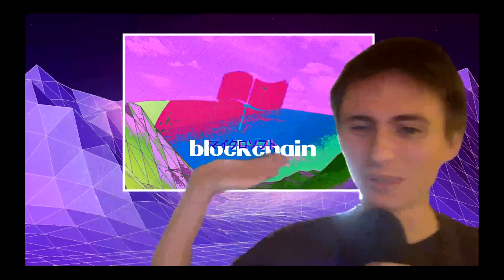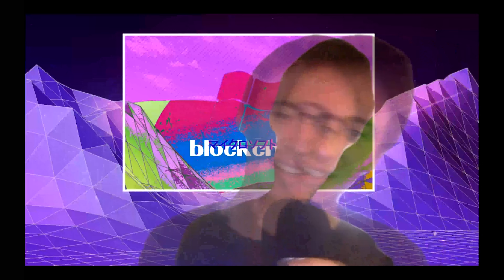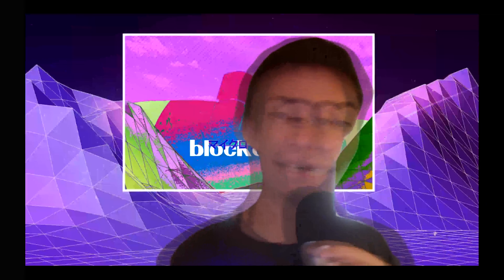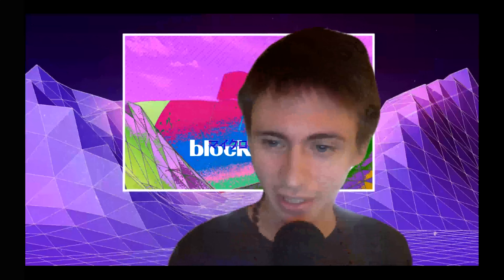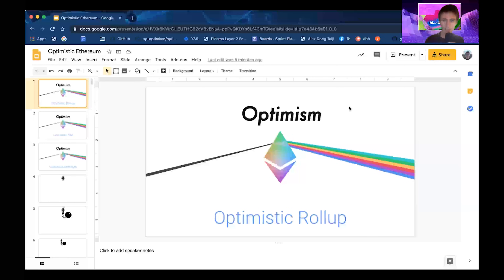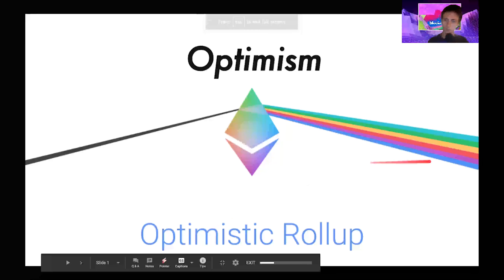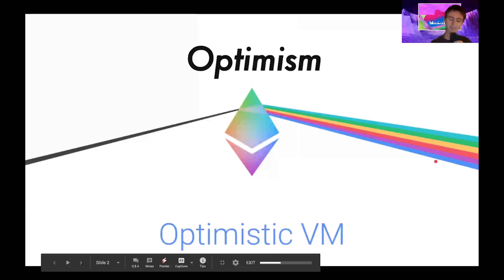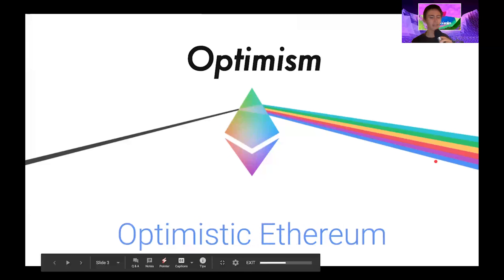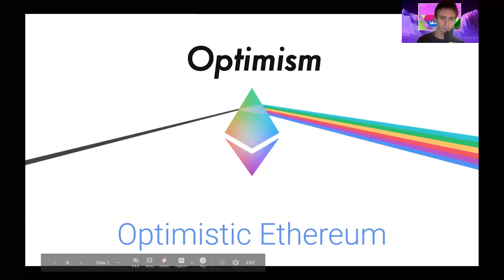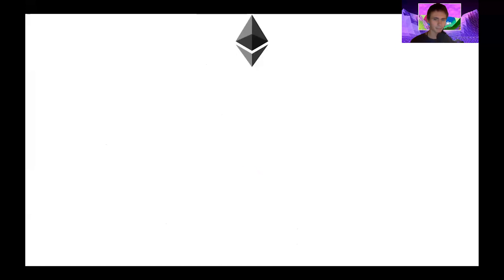Hello, this is carl.tech coming at you live from the blockchain. Today we're going to talk about a lot of optimistic stuff. We're going to talk about optimistic roll-up, the Optimistic Virtual Machine, and everything together in the package: Optimistic Ethereum.